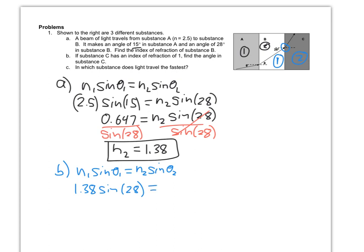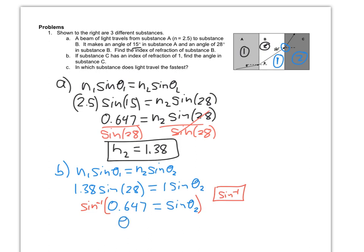That's going to be equal to N2, which is for substance C — an index of refraction of 1 — times sine of theta 2, and that's what we're solving for. This left side of the equation becomes 0.647, equal to sine of theta 2. We're going to take the inverse sine of both sides to solve for theta 2, and we find that theta 2 is going to be equal to 40.3 degrees.